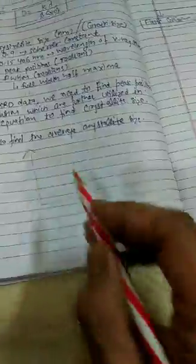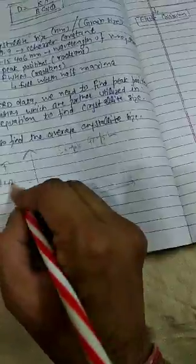How we are calculating this, let's suppose this is the sample graph from an XRD that we obtained. Obviously it is in between intensity and 2 theta. Let's suppose we are getting a particular curve like this and so on. These are the peaks.